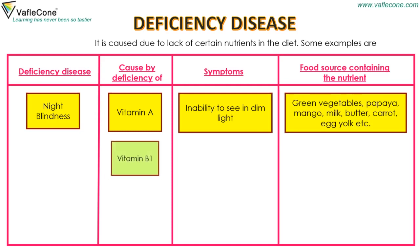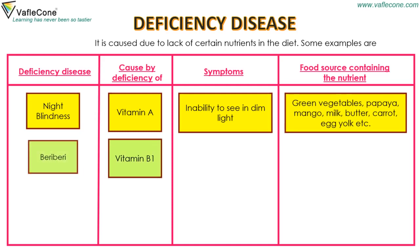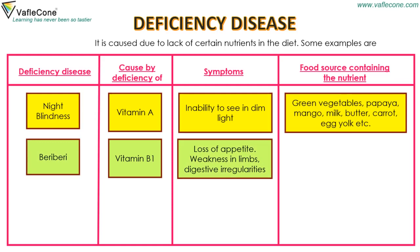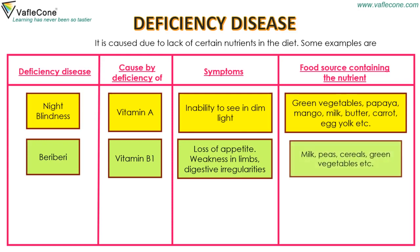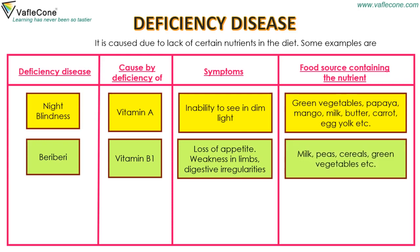Lack of vitamin B1 causes beriberi. Symptoms are loss of appetite, weakness in limbs, and digestive irregularities. Food sources containing the nutrients are milk, peas, cereals, green vegetables, etc.